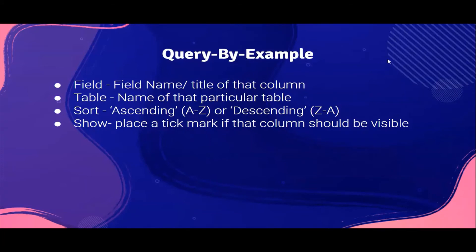Next, it will say sort. Here, if you need data in a particular order — A to Z or Z to A — if you want it in alphabetical order starting from A to Z, you have to write ascending. Otherwise, if you want it from Z to A, you have to write descending.